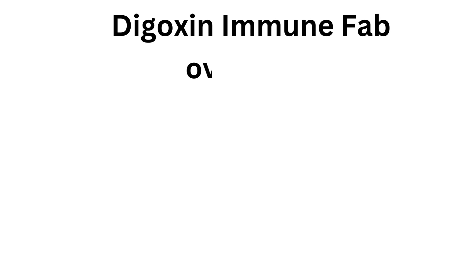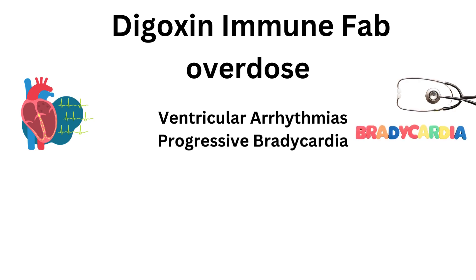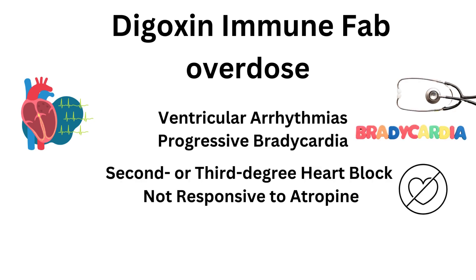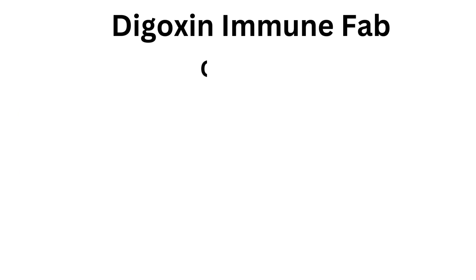And for the manifestations of life-threatening digoxin toxicity due to overdose, such as severe ventricular arrhythmias, progressive bradycardia, second or third degree heart block not responsive to atropine, or serum potassium concentration more than 5.5 milliequivalent per liter in adults or 6 milliequivalent per liter in children.